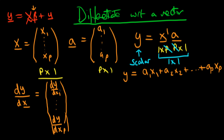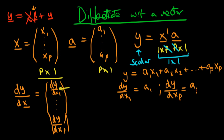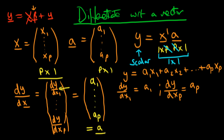Because we've written y in this explicit form, it's quite easy to find the particular entries in our vector of derivatives. The first entry is dy/dx1: when we differentiate with respect to x1, all other terms go to zero, so we just get a1. Similarly, dy/dxp equals ap. So the vector of derivatives has entries a1 all the way through to ap — which is just the vector a.